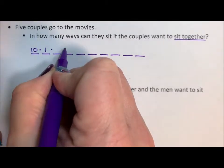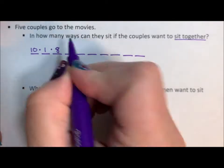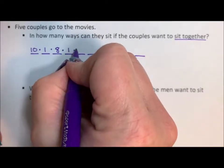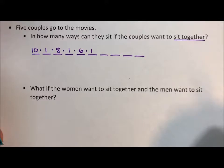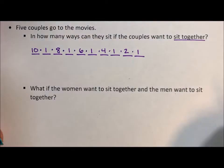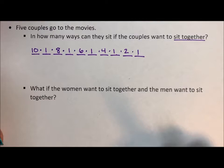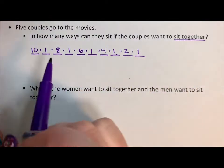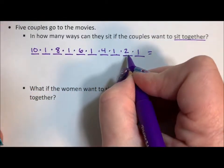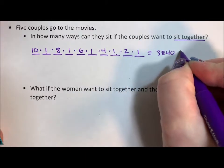Now that two people have sat, there are only eight people left for the next seat. The couples are sitting next to each other, so we know who's going to sit next. We have six people, then four, then two, and there's only one person left at that point. So every other seat is decided by whoever the random person is. If we multiply 10 times 8 times 6 times 4 times 2, we get 3,840 seating arrangements.